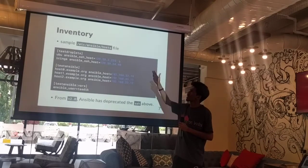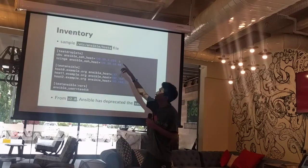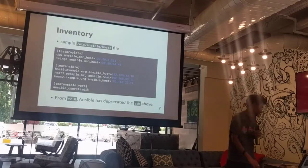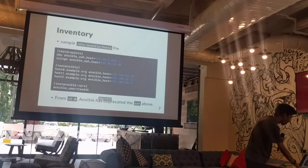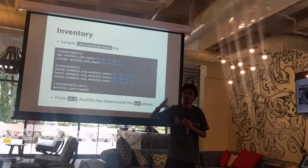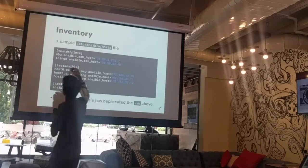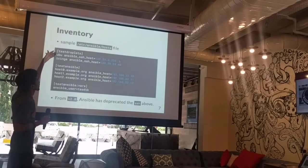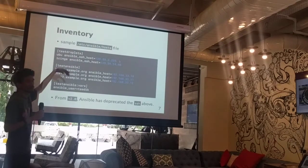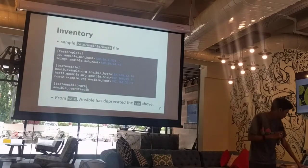This would be a simple example of how an inventory file looks like. By default it's placed at a specific path. What you can see is it stores a list of web servers or hosts which you would be managing through Ansible. In this case, 'test_droplets' would be a group name inside which you would be having hosts. This would be another group — similarly you can have a lot of groups inside this host. You are also specifying variables like 'ansible_host' which would be the IP address of the server you are handling.